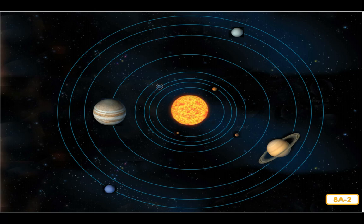The first four planets you will learn about are called the inner planets, or the ones near the center of the solar system: Mercury, Venus, Earth, and Mars.